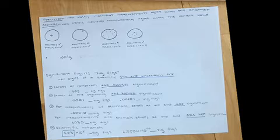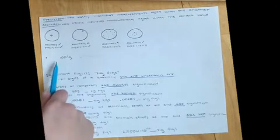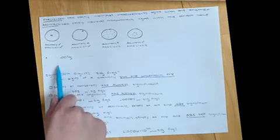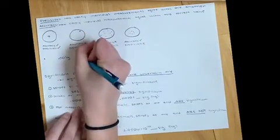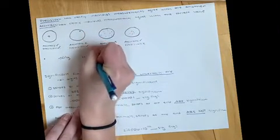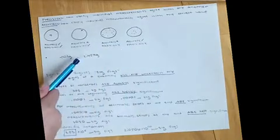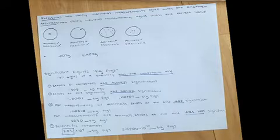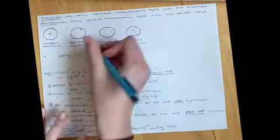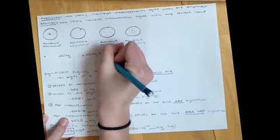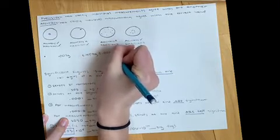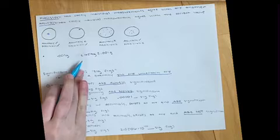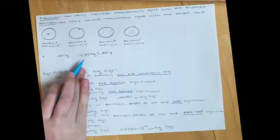Moving on to measurement uncertainty. Say we have a scale that measures to three decimal places, or the thousandths place — 0.001 gram. If we measure something and the scale reads 2.454 grams, this isn't actually the precise value. The scale could be off by plus or minus 0.001 gram, because we don't know if it's 2.4541 or 2.4542 grams.